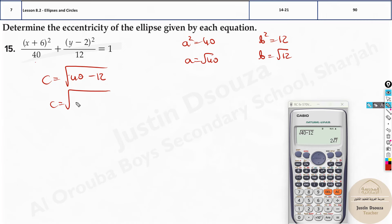And over here we can write 2 root 7. And now what is e value? C by a, that is 2 root 7 divided by root of 40. This is 40, and that will be the answer over here. This divided by root 40 will give you the answer, that is 0.84.